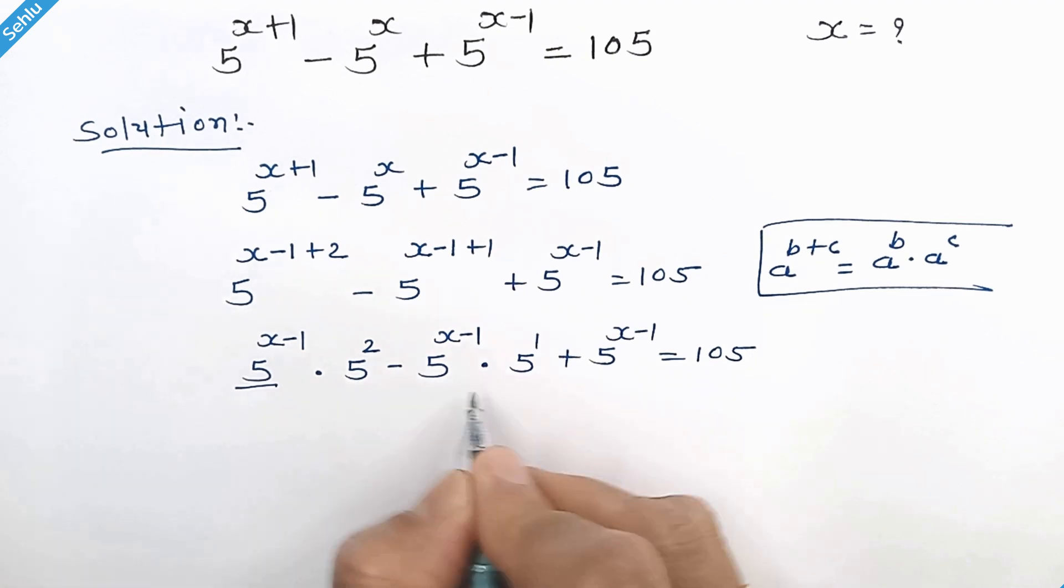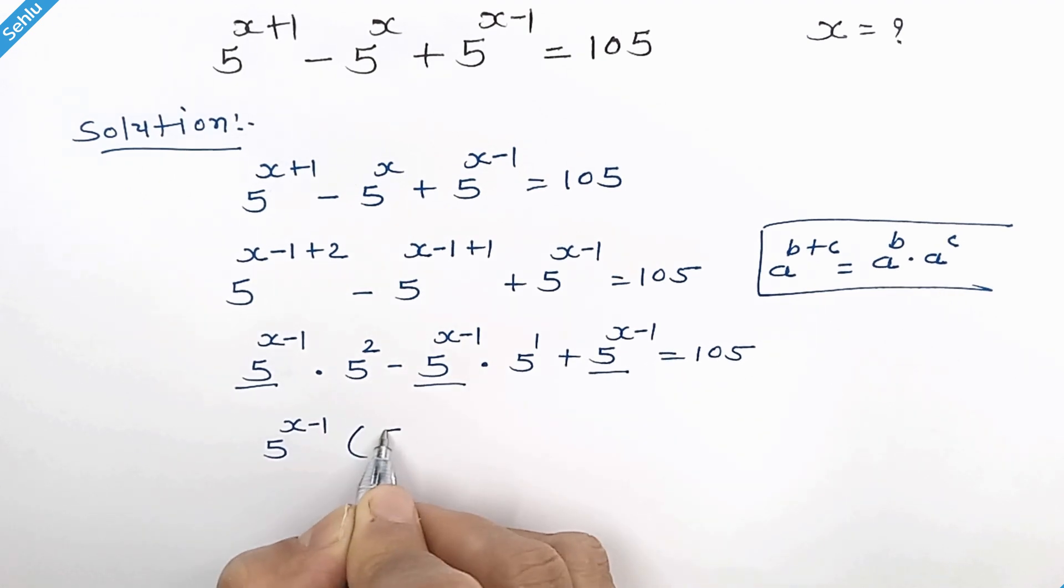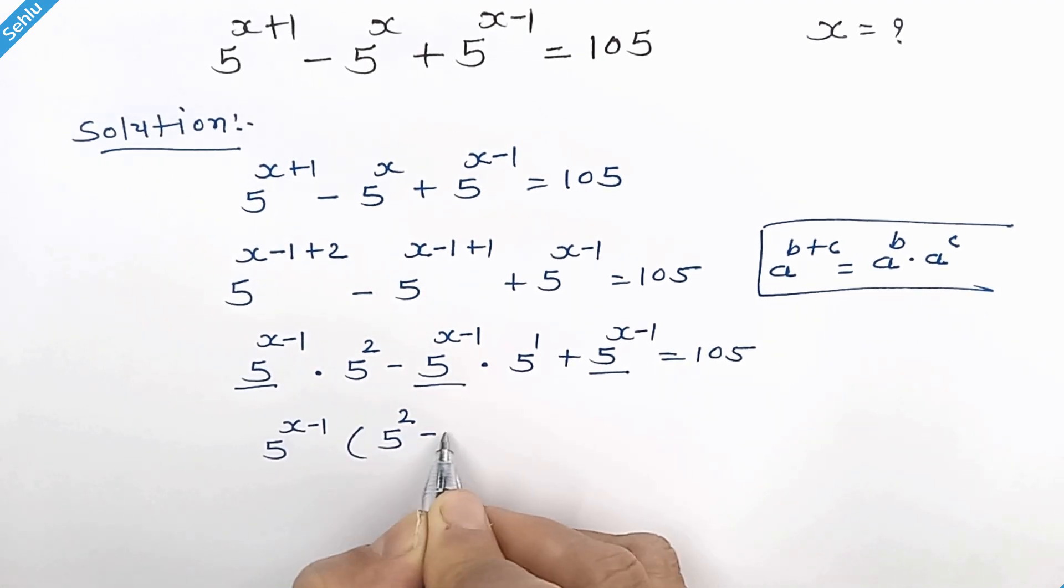Now we can factor out 5 to the power x minus 1. So we have 5 squared minus 5 to the power 1 plus 1.